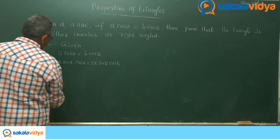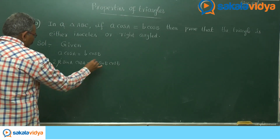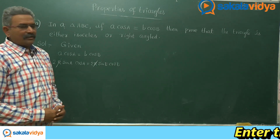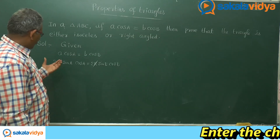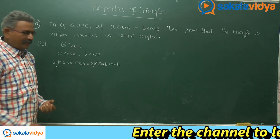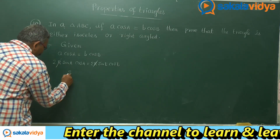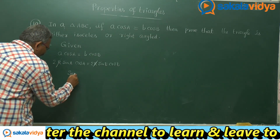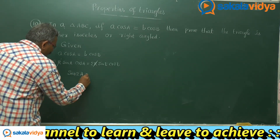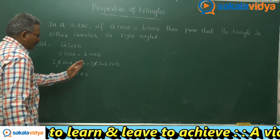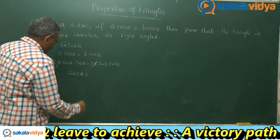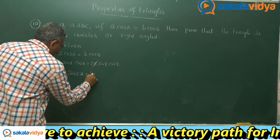R gets cancelled on both sides. Next, we can write 2·sinA·cosA as sin2A, and 2·sinB·cosB as sin2B. So we have sin2A equals sin2B.